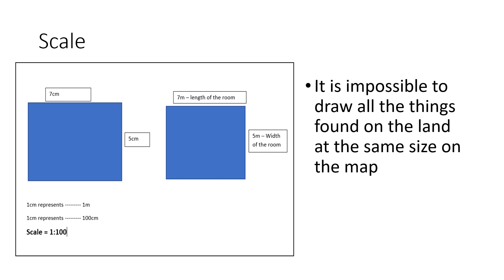So, instead of 7 meters, we take 7 centimeters to draw the map. So, the room we are drawing on the map has the length of 7 centimeters and the width of 5 centimeters.